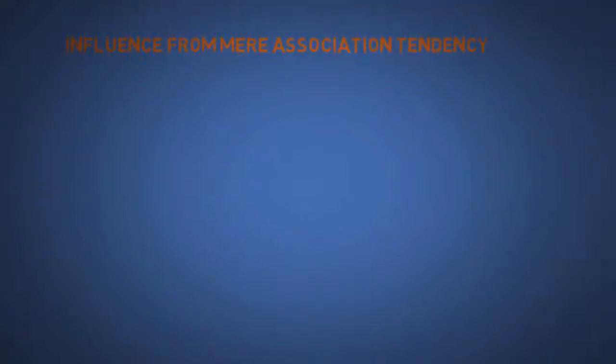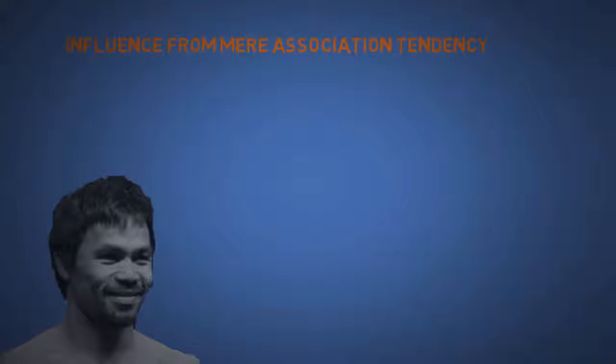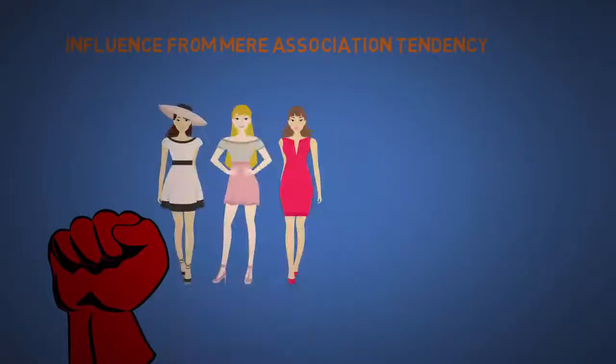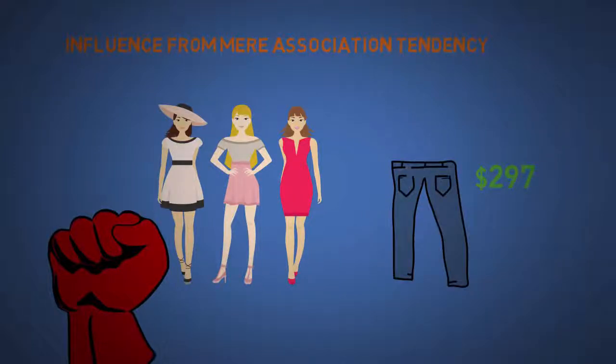The tenth is influence from mere association tendency. When Nike found out and Manny Pacquiao called the gay community dumber than animals, they immediately ended their long term partnership with him. Association is that powerful, and that is why models are often used to showcase products. Another example is how we associate price with the quality of the item. That's why some companies make crappy products and price it high.